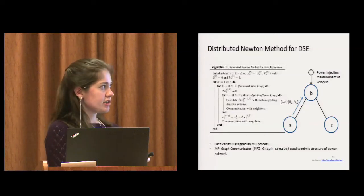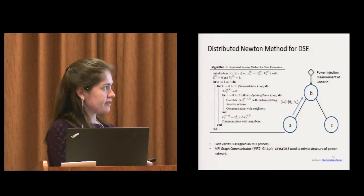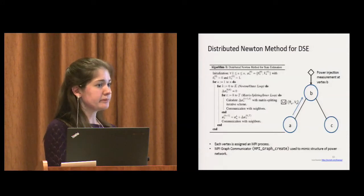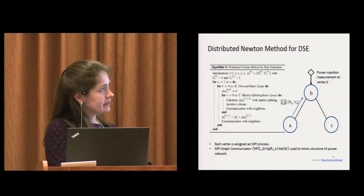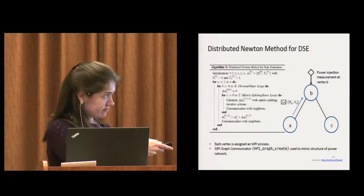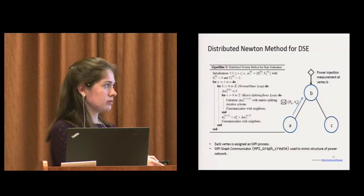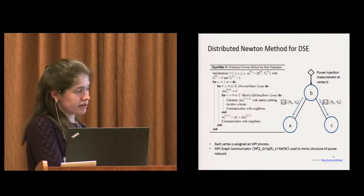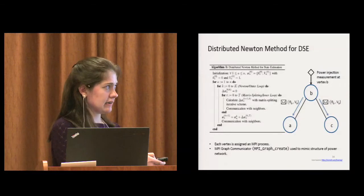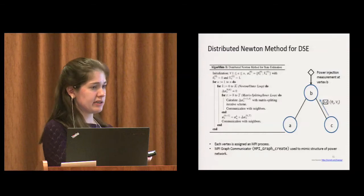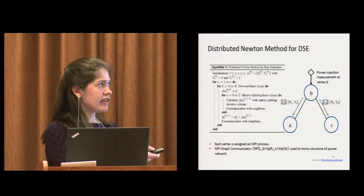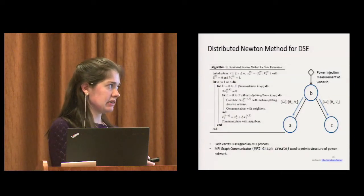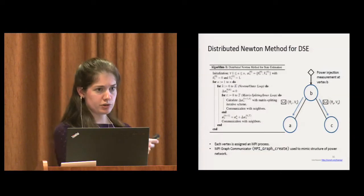To illustrate how the communication is occurring, if we're at this point in the algorithm, there is communication at each inner loop and at each outer loop. At the end of the outer loop, A will send its estimate to its neighbor B. B sends its current estimate to its neighbors A and C. C sends its estimate to its neighbor B. So that can all happen in parallel. The power injection adds a complication in that A needs some information from C, and C needs information from A, which should pass through B.